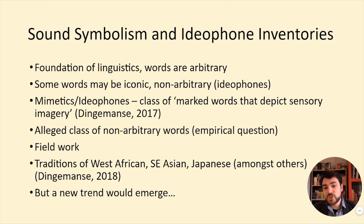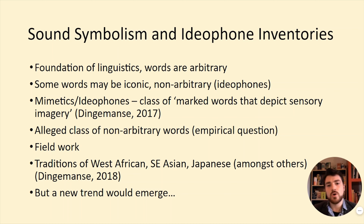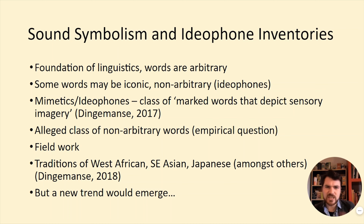In many other parts of the world they're called idiophones — a class of marked words that depict sensory imagery, where 'depict' carries the sense of a painting word. So doki doki paints a picture of the situation by copying the heartbeat and comes to be conventionalized to mean nervous excitement. These alleged non-arbitrary, iconic words exist in many world languages, identified through extensive fieldwork — both introspective work in Japan and fieldwork conducted in languages of sub-Saharan Africa, Southeast Asia, and South America.